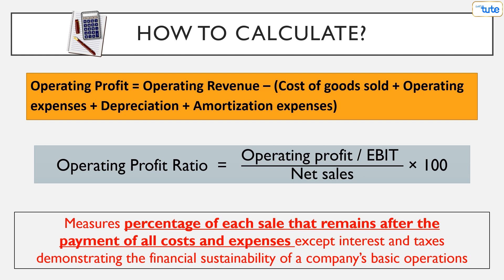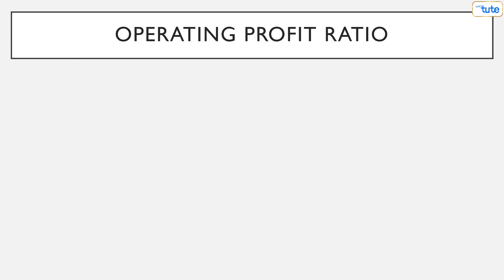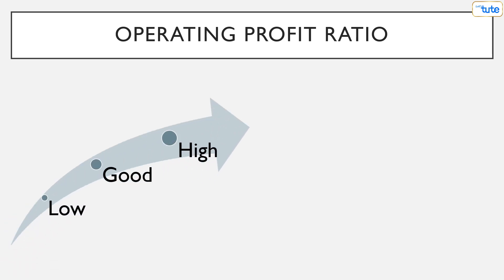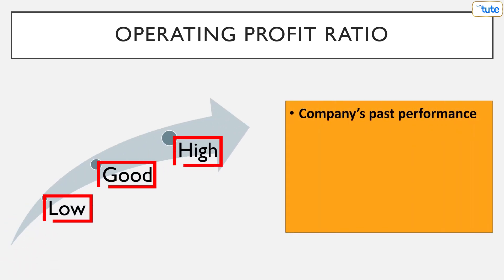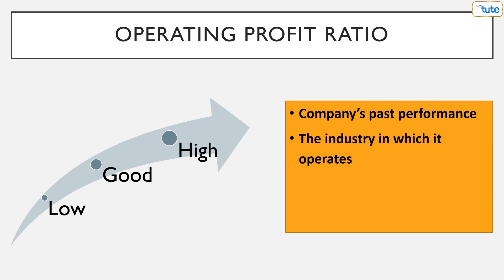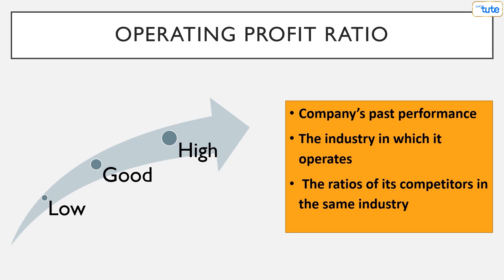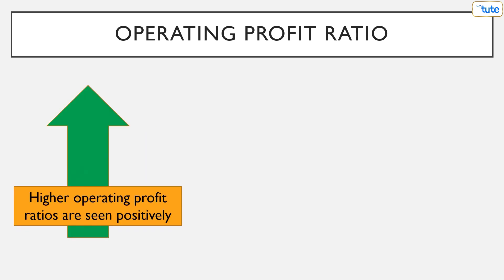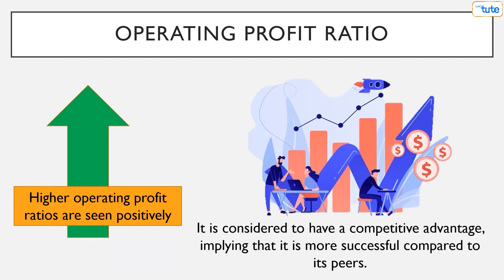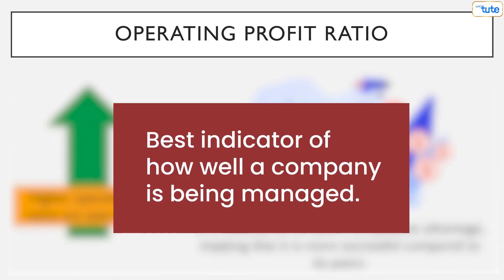This ratio measures the percentage of each sale that remains after payment of all costs and expenses except interest and taxes, demonstrating the financial sustainability of a company's basic operations. Whether an operating profit ratio is high, good or low depends upon the company's past performance, the industry in which it operates, and the ratios of its competitors. Higher operating profit ratios are seen positively, and when a company's operating profit ratio outperforms the industry average, it is considered to have a competitive advantage. It is one of the best indicators of how well a company is being managed.